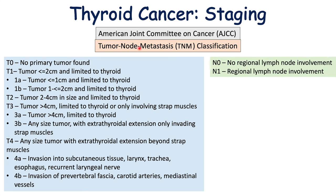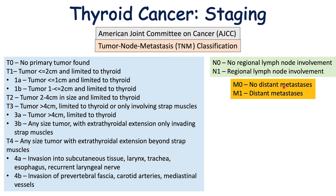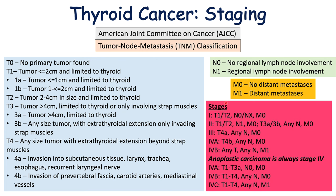For the node (N) component, N0 is no regional lymph node involvement and N1 is regional lymph node involvement. For metastasis (M), M0 is no distant metastases and M1 is distant metastases found. The stages are: Stage 1 is T1 or T2 with N0 and M0. Stage 2 is T1 to T2 with N1 and M0, or T3A and T3B with N0 and M0. Stage 3 is T4A with any N and M0. Stage 4A is T4B with any N and M0. Stage 4B is any T with any N and M1.